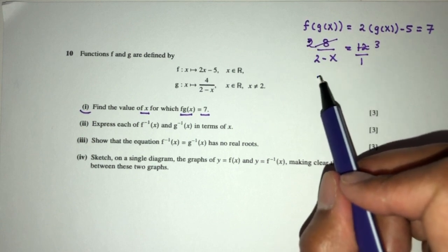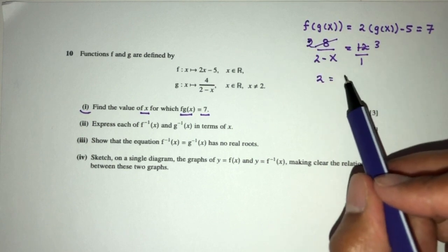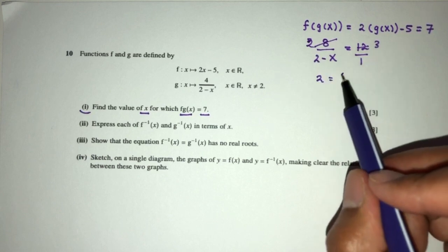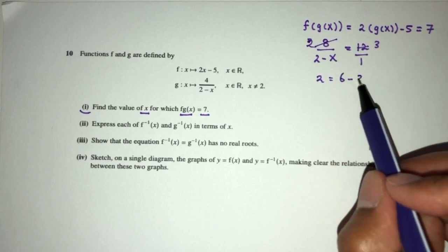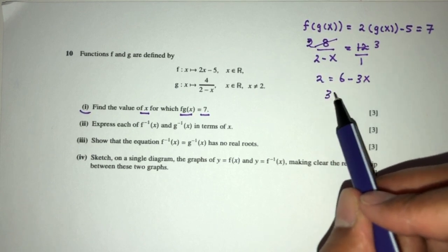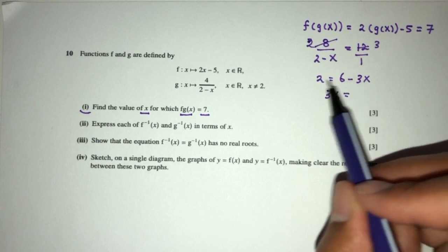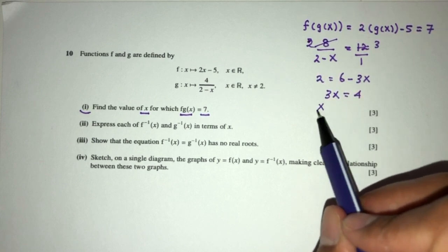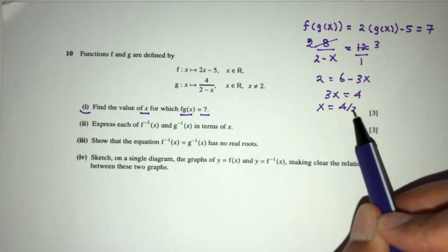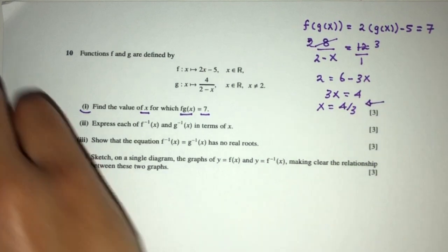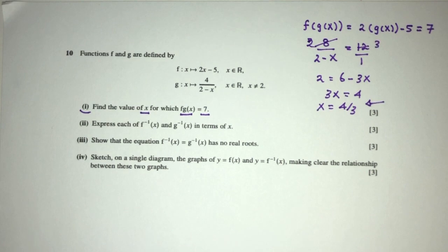Cross multiply and you will have 2 here. That will be 3 times 2 is 6 minus 3x. So 3x will be - send this over here - that will be 4. So x = 4/3. That will be part 1 of the question, just solving the equation step by step.